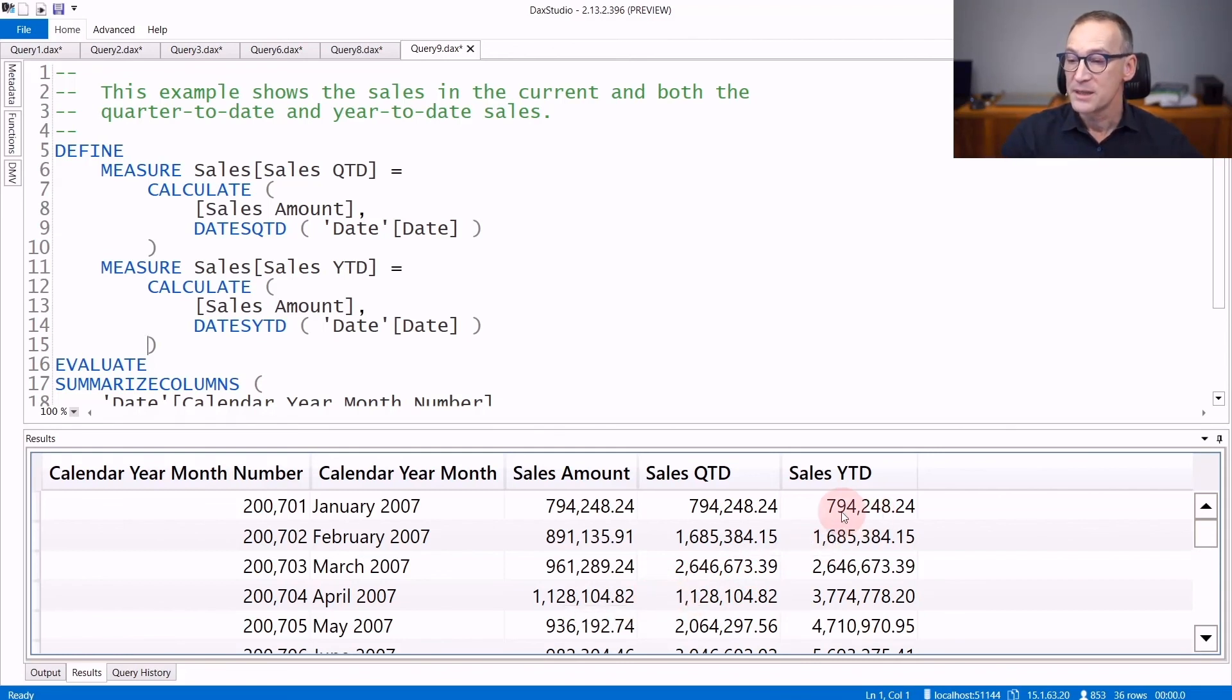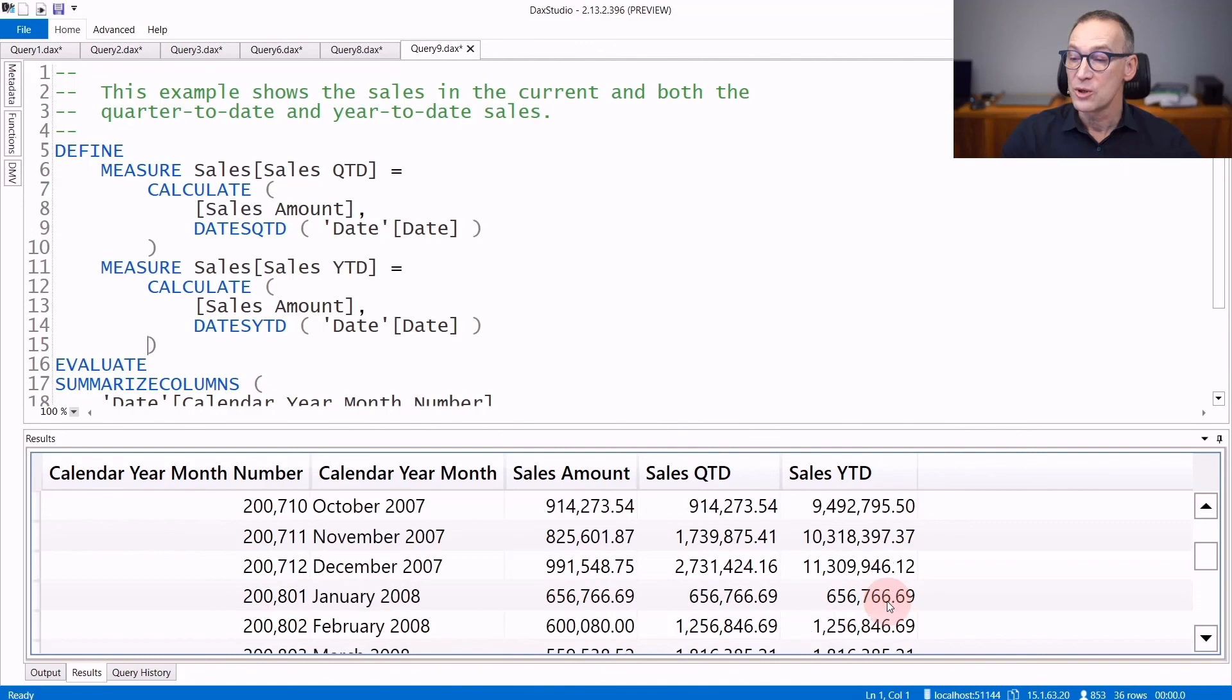Year-to-date, on the other hand, starts like quarter-to-date, but when the quarter changes, it does not change its value and it goes on growing. It will reset its value in January 2008 when the new year starts.